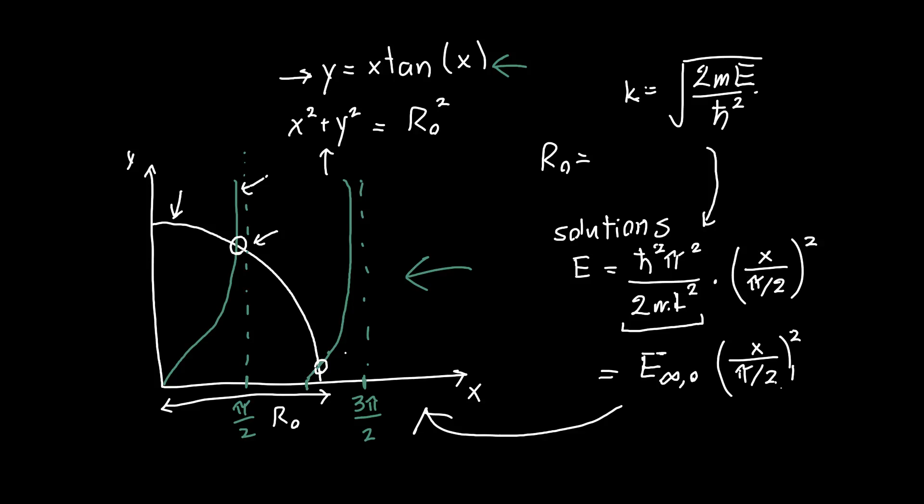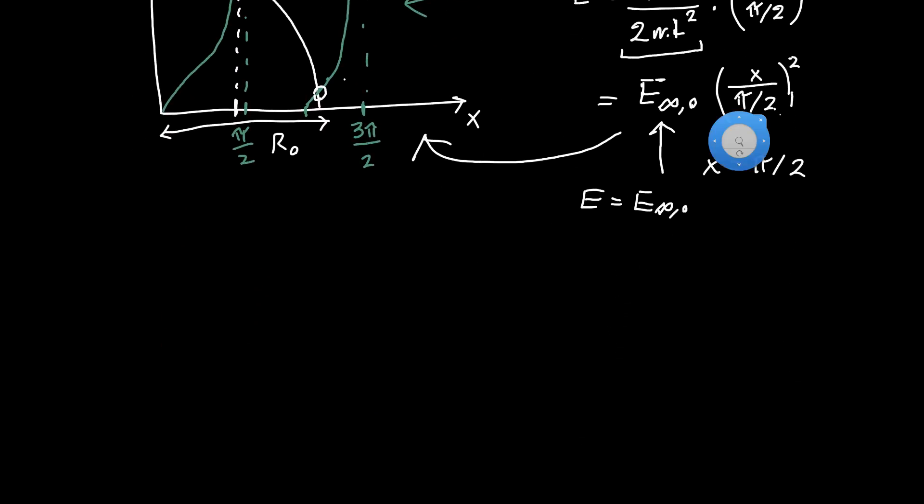And so this just lets us read out directly from the graph. If I solve this somewhat abstract set of equations, just in terms of y and x and r-naught, and r-naught contains most of the physical information about the system, so v-naught, L, etc., if you solve that, you plot everything, you figure out what x is, so in this case we figured out x was here, for example, then you immediately know the energy. And in particular, you know how the energy relates to the original energy, or the energy of an infinite quantum well. And so we would expect when x is equal to pi over 2, e is just equal to our infinite quantum well energy.